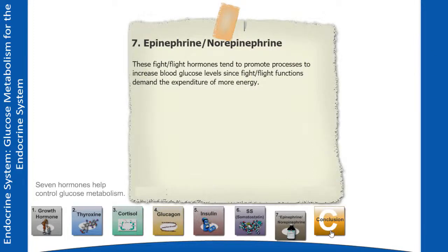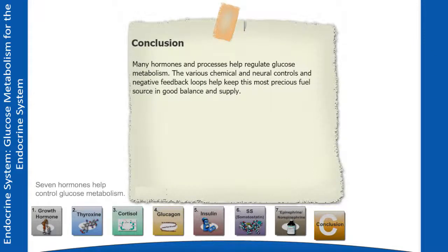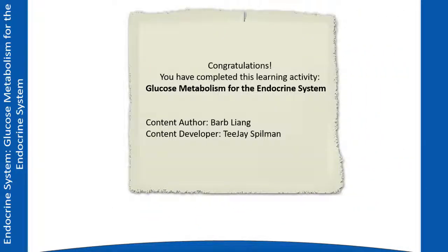In conclusion, many hormones and processes help regulate glucose metabolism. The various chemical and neural controls and negative feedback loops help keep this most precious fuel source in good balance and supply. Congratulations, you have completed this learning activity: glucose metabolism for the endocrine system.